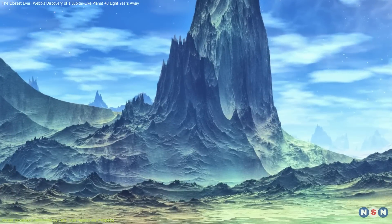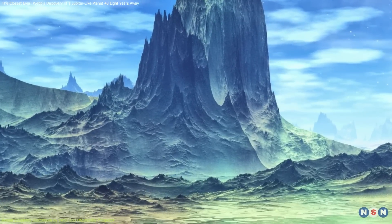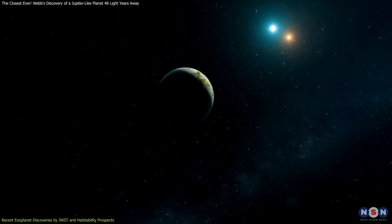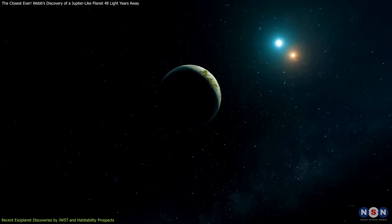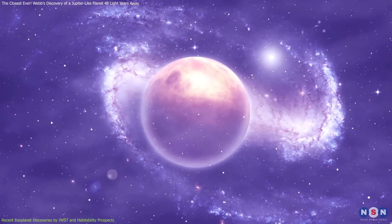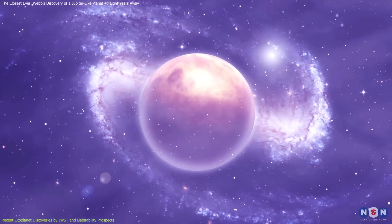For a planet to be habitable, its temperature needs to allow for liquid water to exist. This does not just depend on the distance from its star, but also on atmospheric composition, which can create a natural greenhouse effect.